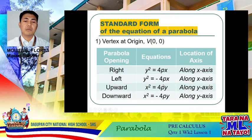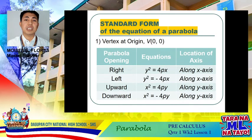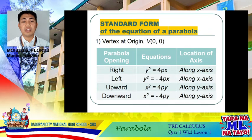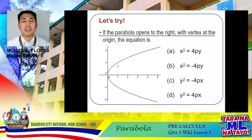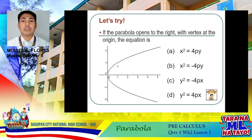We have the term 4P, which is necessary for us to consider the graph and the equation of a parabola. 4P is represented by the length of your latus rectum. For example, if the parabola opens to the right with vertex at the origin, the equation is y² = 4Px, where 4P is positive. If 4P is negative, it opens to the left. If the parabola opens downward with vertex at the origin, x is on the second degree and 4P is negative. If 4P is positive and x is on the second degree, it opens upward.